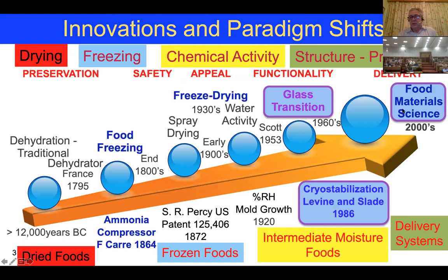People started to look in detail at what glass transition actually means in terms of processing and stabilizing foods. Harry Levine and Louis Slade published many literature reviews on the importance of water relations and glass transitions in foods. Nowadays we look at food material science in terms of structure, function, properties, and delivery — from dried foods to frozen foods, intermediate foods, and delivery systems.